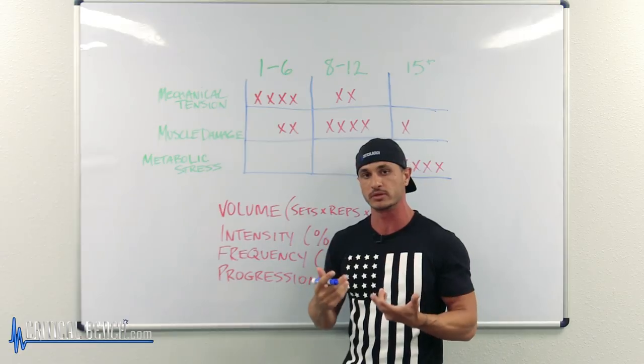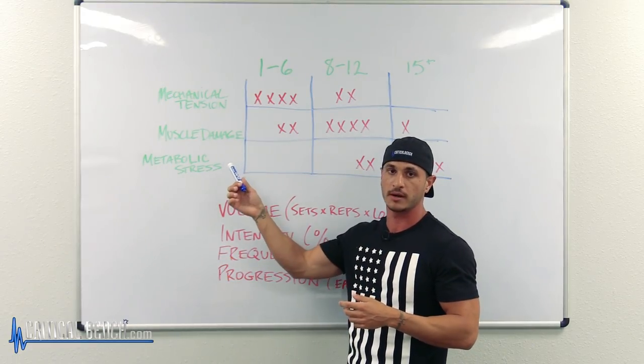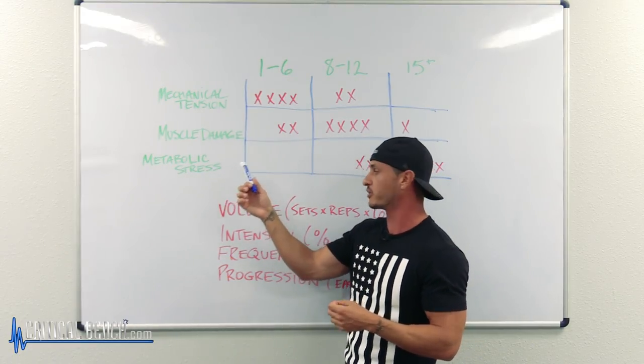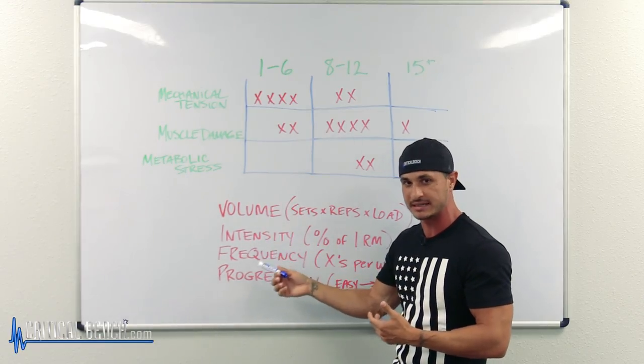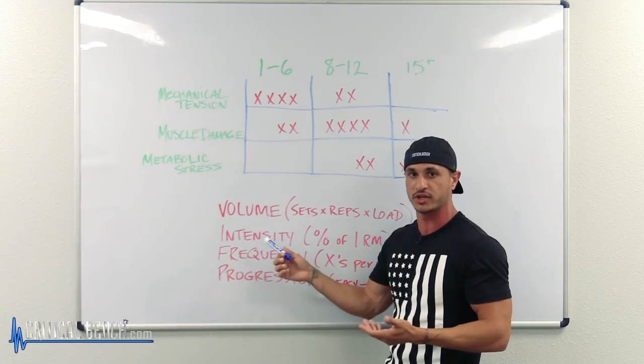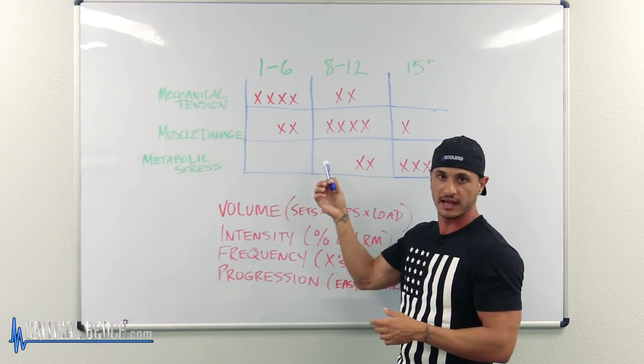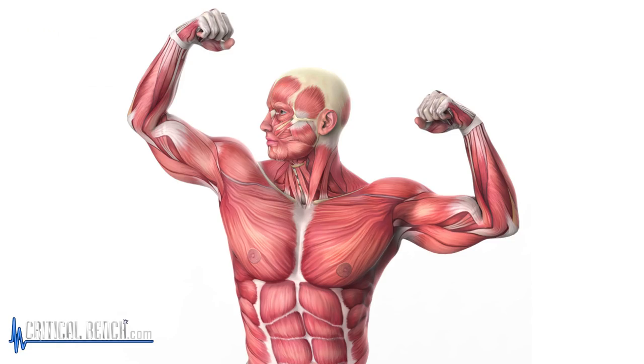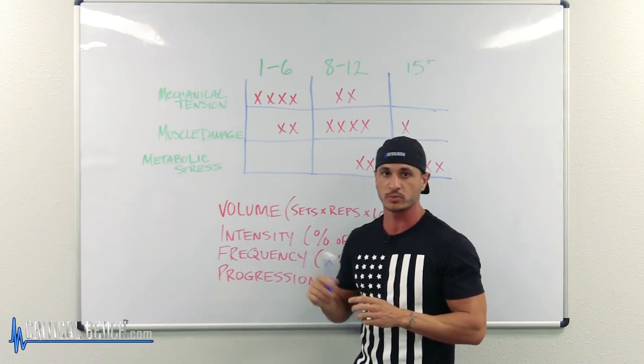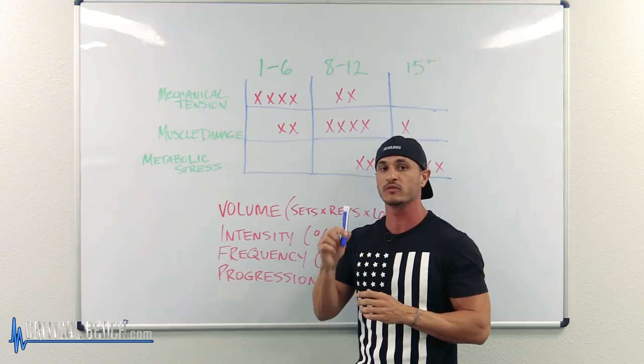So they might increase muscle protein synthesis, 36 hours later it drops back down to baseline, and then it's about time to train your chest again where it elevates again, 36 hours goes back to baseline. You get the idea. You're spending more time in a growing state when you're training a muscle more frequently. This is despite volume being equal.